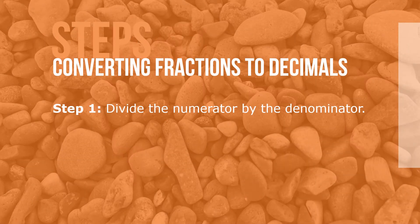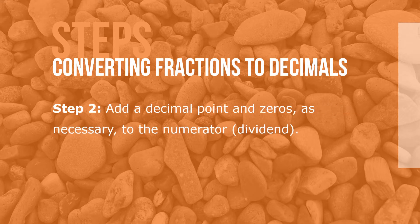Here are the steps for converting fractions to decimals. Step 1: divide the numerator by the denominator. Step 2: add a decimal point and zeros as necessary to the numerator, the dividend.